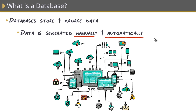Data is also generated automatically, and this is even more relevant today with smart devices. Remember that refrigerator I mentioned? If you have a smart refrigerator, it is constantly analyzing your fridge to see what's in it so it can generate a list and automatically order what you're missing. All of that data is automatically generated and stored somewhere inside of a database.